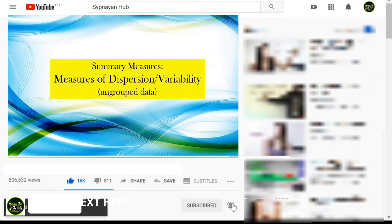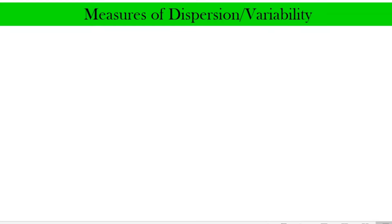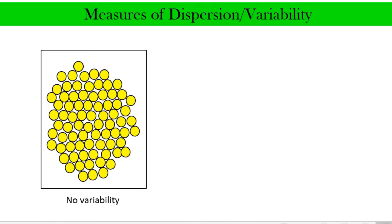But before we continue, do not forget to like this video, hit the subscription and notification bell to stay updated on future videos. Let us consider the following figures. Suppose this rectangle here contains circles of a singular color — the color of each circle represents the characteristic of that data point. We say there is no variability at all because all of them are yellow.